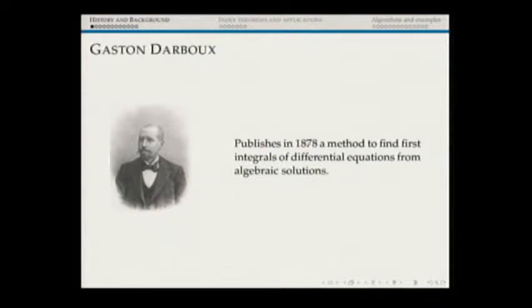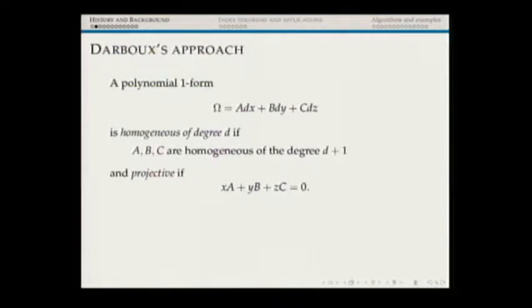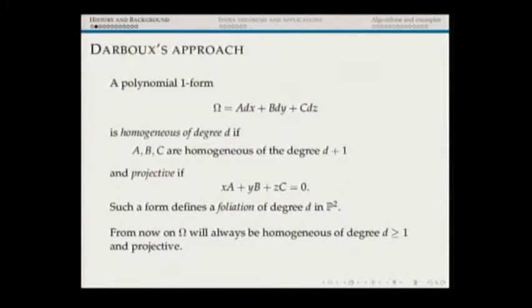By a differential equation he meant what we would call a polynomial one-form: A dx + B dy + C dz, where A, B, C are homogeneous of degree D+1. Moreover, omega is projective — it satisfies XA + YB + ZC = 0. In modern parlance, this defines a foliation of degree D in P². So capital omega denotes a homogeneous and projective one-form; the degree D is the degree of the foliation, and A, B, C have degree D+1.